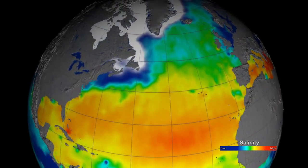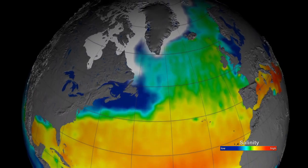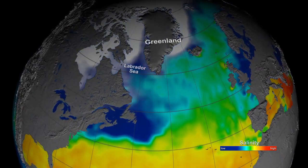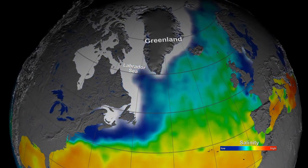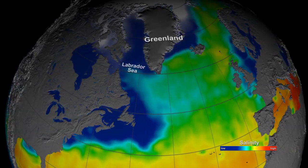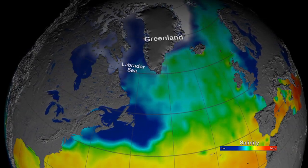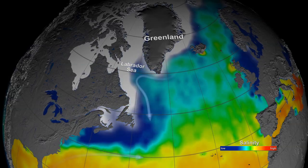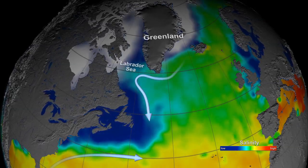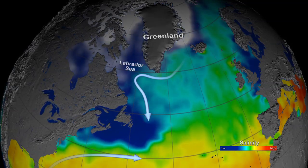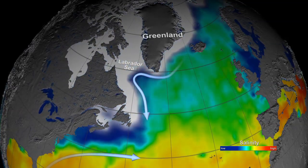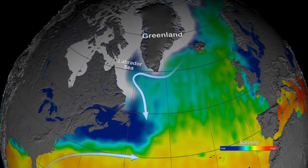At high latitudes, the seasonal melting of sea ice causes a sharp decrease in sea surface salinity. We see examples of this in the Labrador Sea and the coastal waters that surround Greenland. In spring and summer, surface currents transport the low salinity water south, where it meets warmer and saltier water carried north by the Gulf Stream.